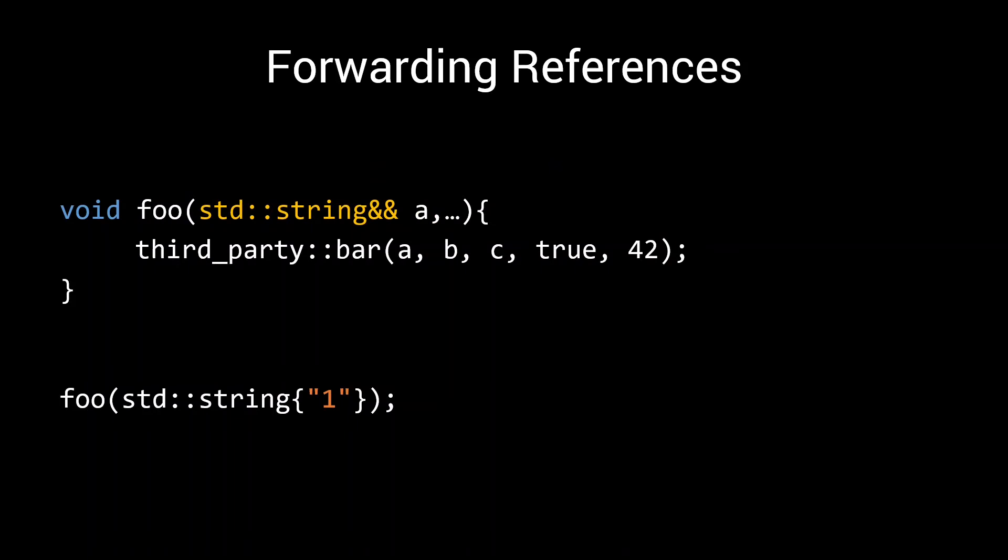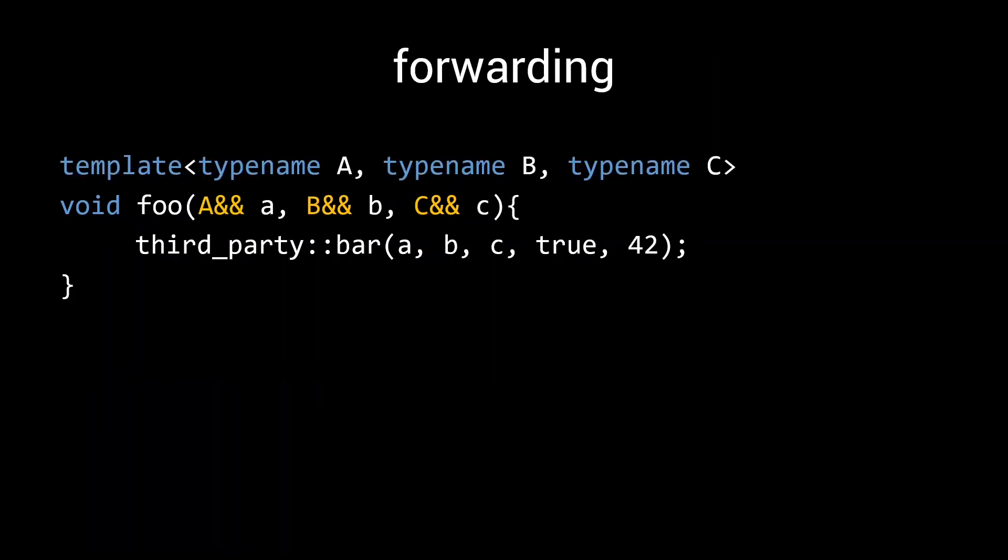In other words, if we pass an l-value to foo, the forwarding reference is deduced to be an l-value reference. If we pass an r-value reference to foo, the forwarding reference is deduced to be an r-value reference. The value category of the input is preserved. Ok, so now that we can accept any input without changing its type or value category, how do you pass them on to our third-party bar?